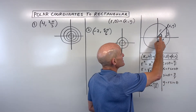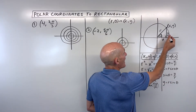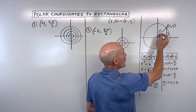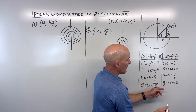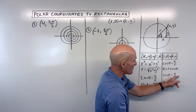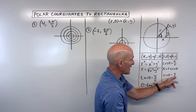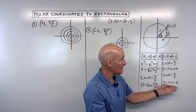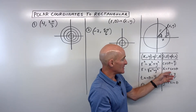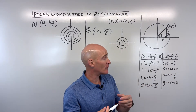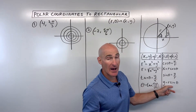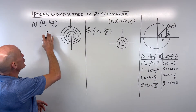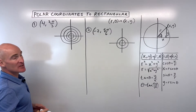Same thing with the sine of the angle. Sine equals the opposite over the hypotenuse, so sine of theta equals y over r. If I multiply both sides by r, the r's cancel and you're left with y equals r sine theta. These two formulas are going to be key for helping us convert from polar form (r, theta) to rectangular form (x, y). I'll show you what I mean in this first example.